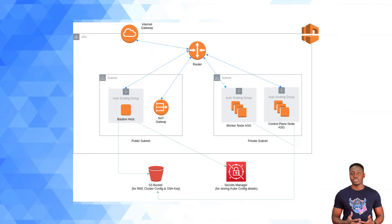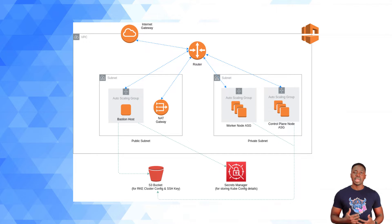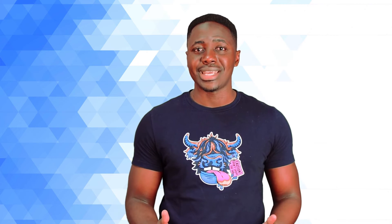Once my Kubernetes cluster has been provisioned, the kube.config file will automatically be generated. Once that file has been generated, the bastion host will read that file and store that data in Secrets Manager. This is important because when you SSH into your bastion host, that kube.config file will not be accessible to you. You'll need to pull that data from Secrets Manager, localize it in kube.config when you sign in using the EC2 user, and you'll be able to interact with the Kubernetes cluster.